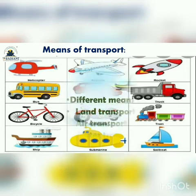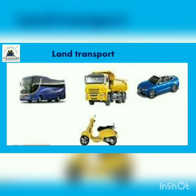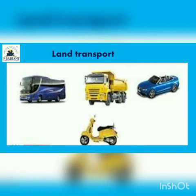Alright children, so there are different means of transport: land transport, air transport, and water transport. You can look at the picture here — these are the vehicles that are used on land. They move on land, like bus, truck, car, scooter. Yeh sab land mein chalte hain, toh isse hum kehte hain land transport, means of land transport.